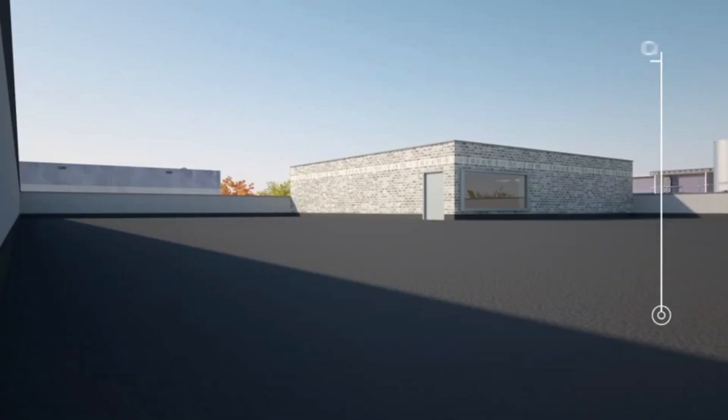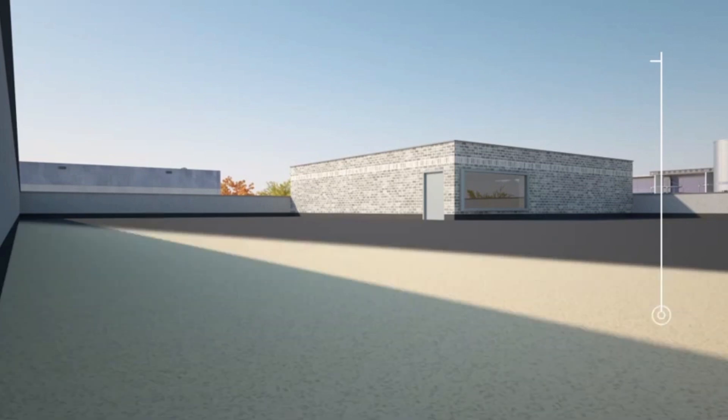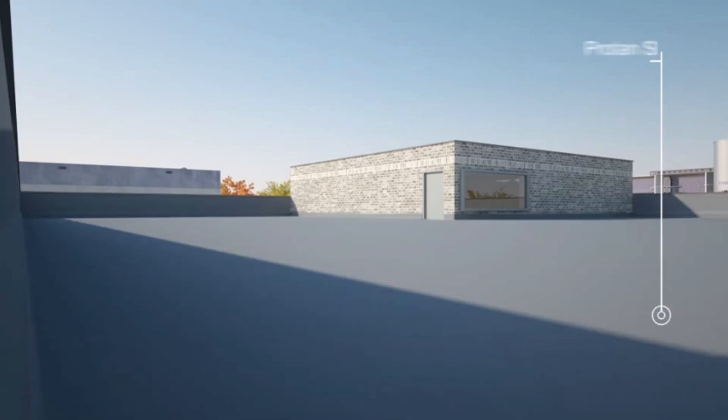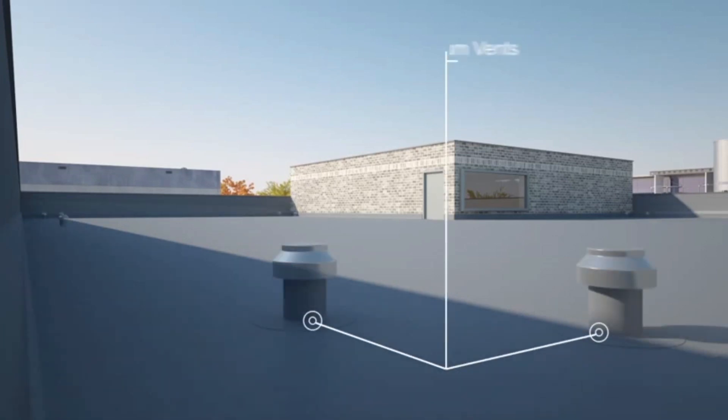Insulation is installed over the vapor control layer, followed by Protan SE waterproofing membrane which is loose laid and air sealed around the perimeter. Vacuum vents are strategically installed around the perimeter at locations predetermined by a design calculation carried out by Protan.